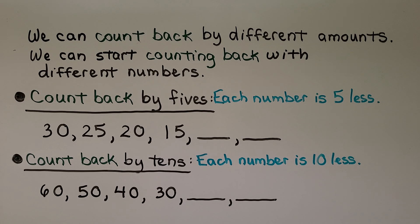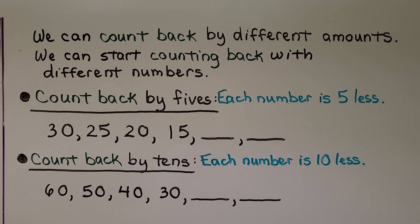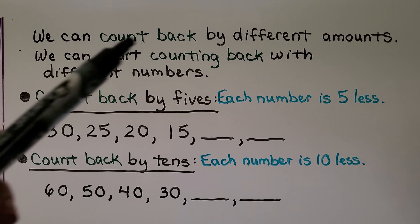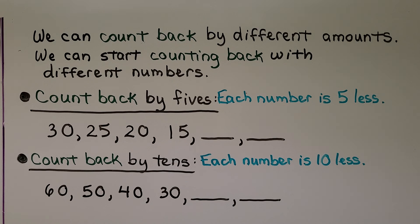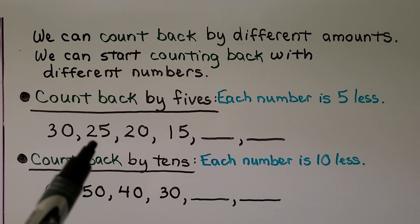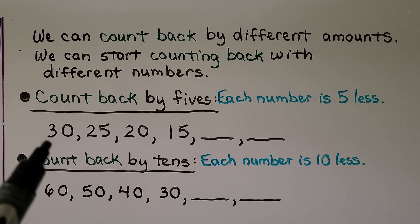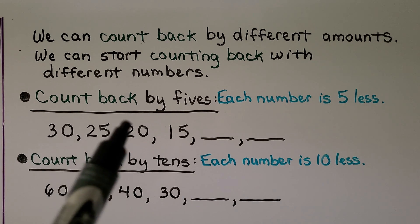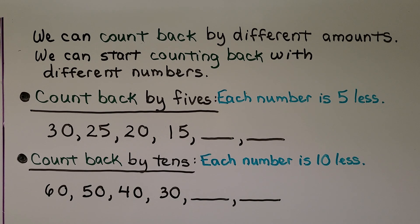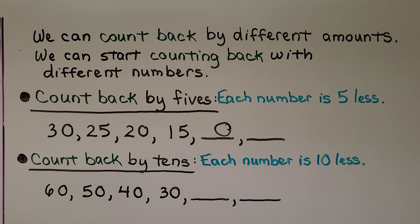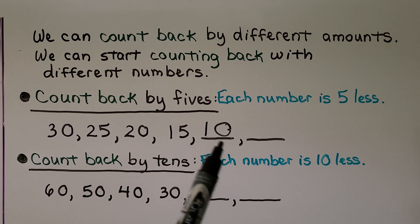We can count back by different amounts and start counting back with different numbers. Before we were counting on and numbers were getting greater — now we count back. If we count back by fives, each number is 5 less. We have 30, and 5 less is 25, and 5 less is 20, and 5 less is 15. Our ones place goes 0, 5, 0, 5 — there must be a 0 in the ones place. What is 5 less than 15? If you said 10, you're correct. And 5 less than 10 — if you said 5, you're right.